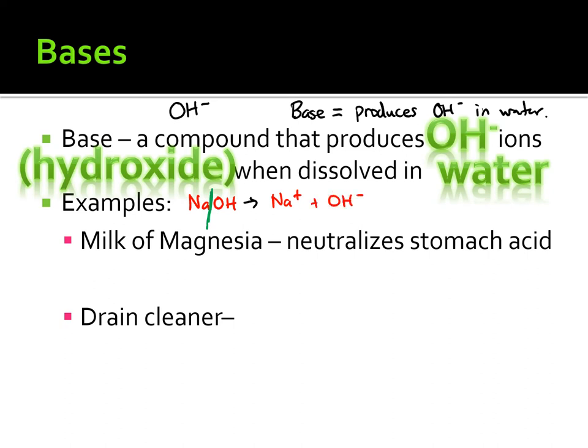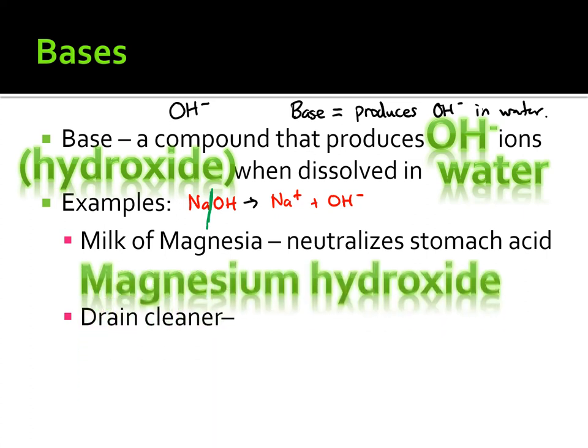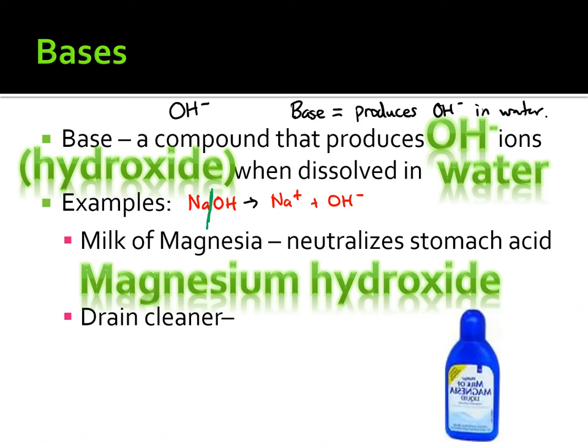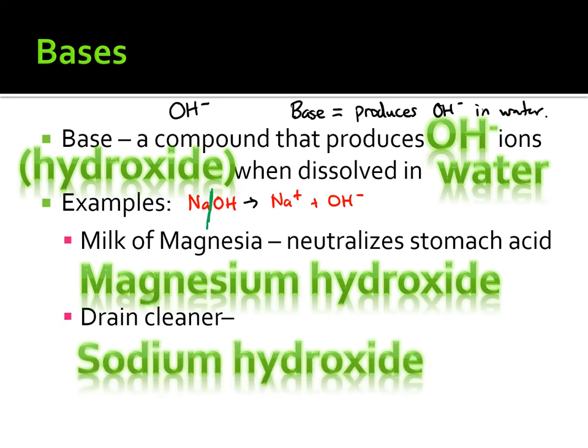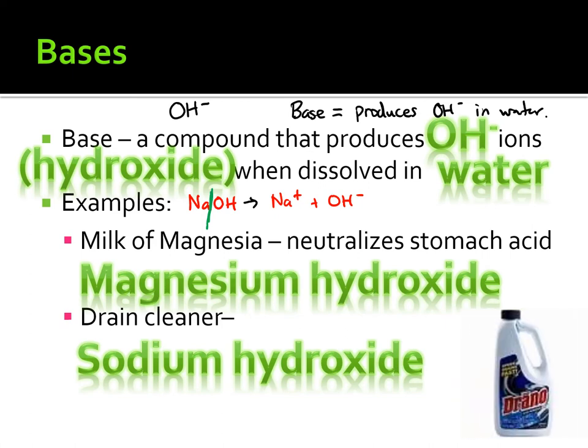A few everyday examples of bases would be milk of magnesia, which is used to neutralize stomach acid and is composed of magnesium hydroxide. Drain cleaner is another example, containing sodium hydroxide — also known as Drano.